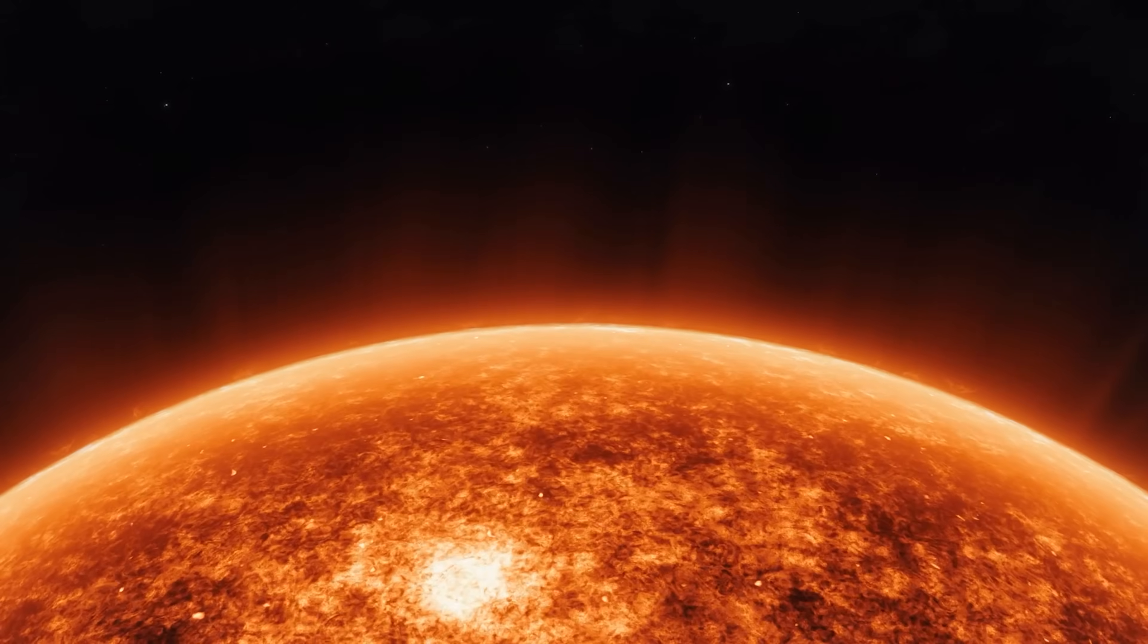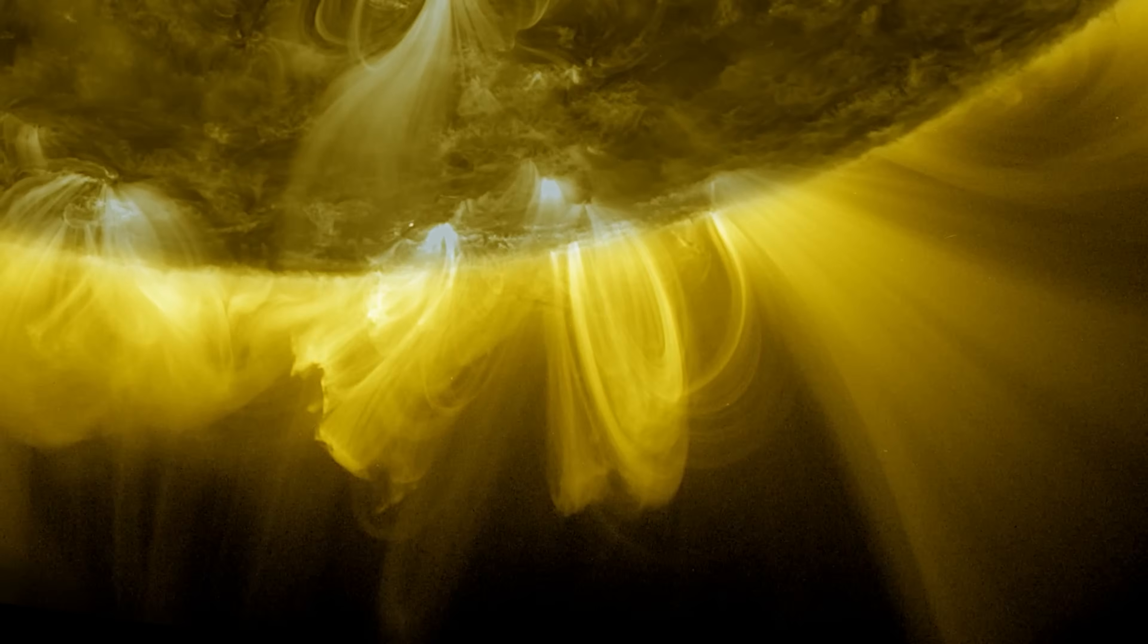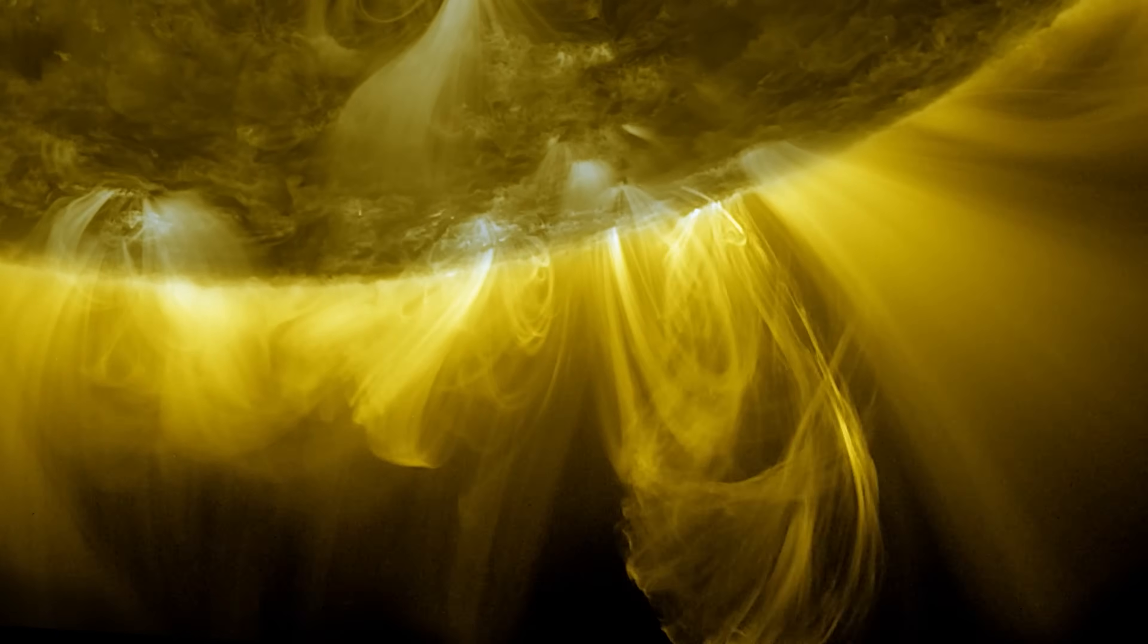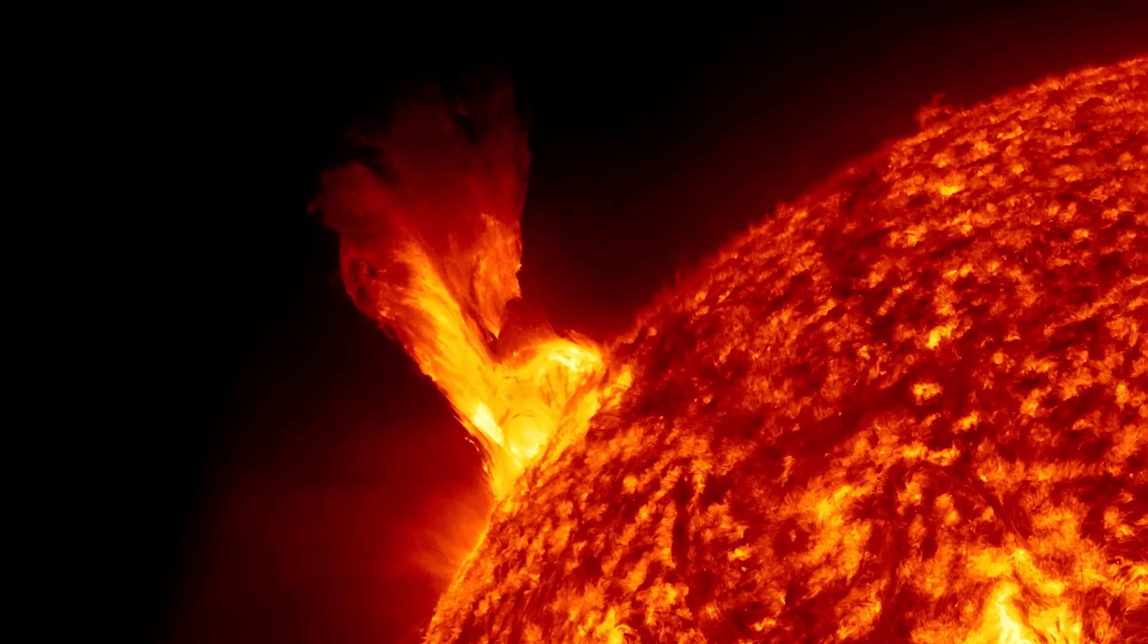During solar minimum, the period of time where the Sun is at its calmest, we might get 1 CME every few days. But during solar maximum, the Sun can produce up to 10 or more a day.